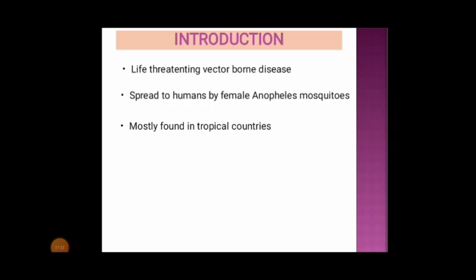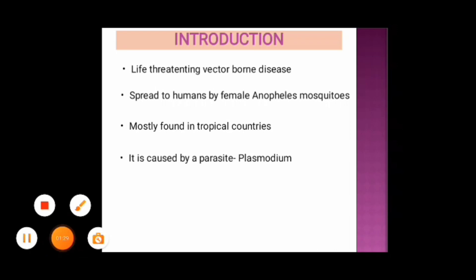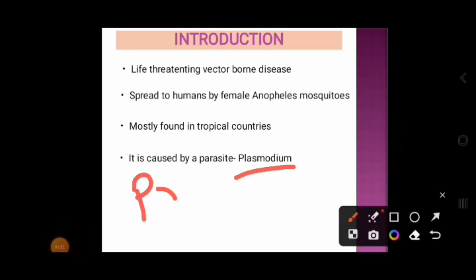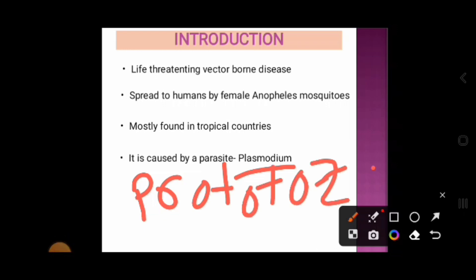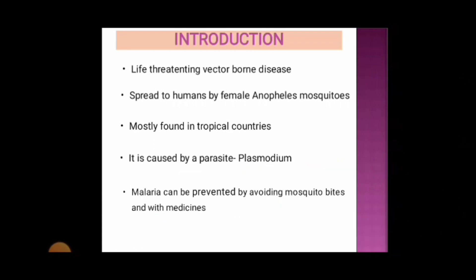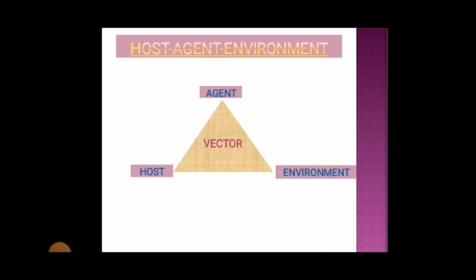This disease is mostly found in tropical countries. It is caused by a parasite named Plasmodium, which is a protozoa. So malaria is a protozoan disease. Malaria can be prevented by avoiding mosquito bites and with medicines, as this disease is transmitted to humans by mosquito bites. Now let's discuss the host, agent, and environment of the disease malaria.